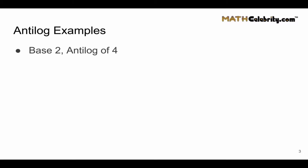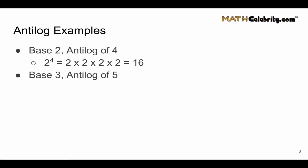Let's take a few examples. We'll start with base 2 and we want the antilog of 4. So our formula is base raised to the log: it's 2 raised to the 4, which is 2 times 2 times 2 times 2 equals 16. Let's take another antilog — base 3, antilog of 5. Well, 3 raised to the 5th power is 3 times 3 times 3 times 3 times 3 equals 243.